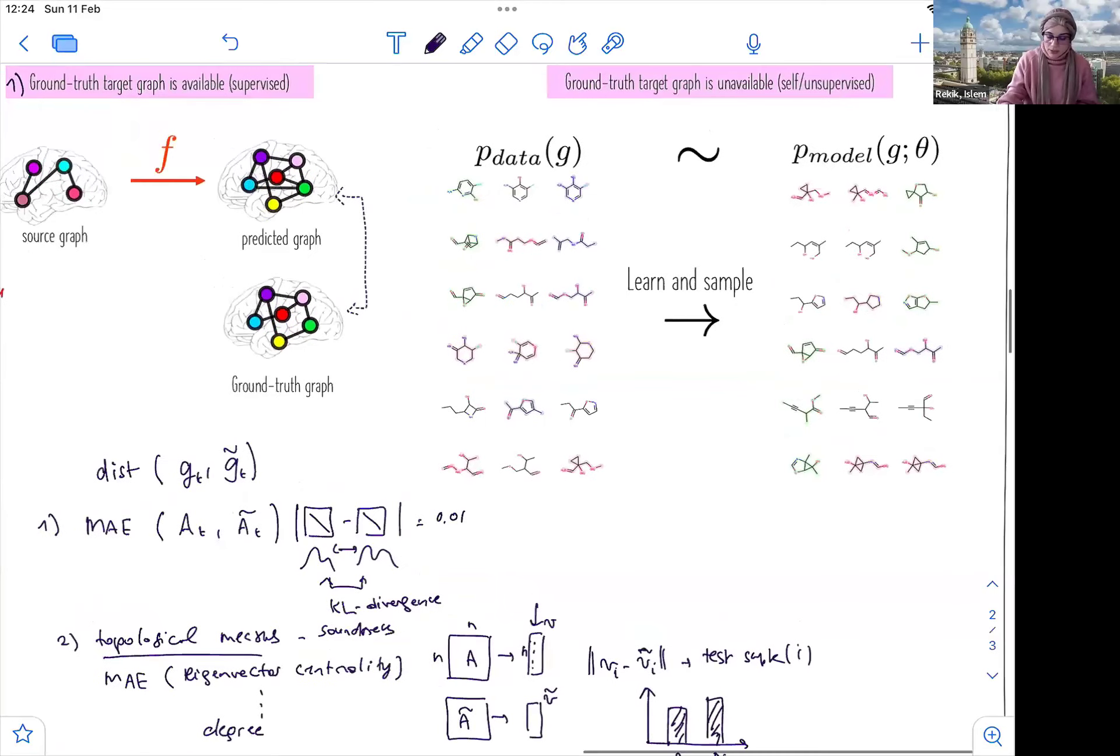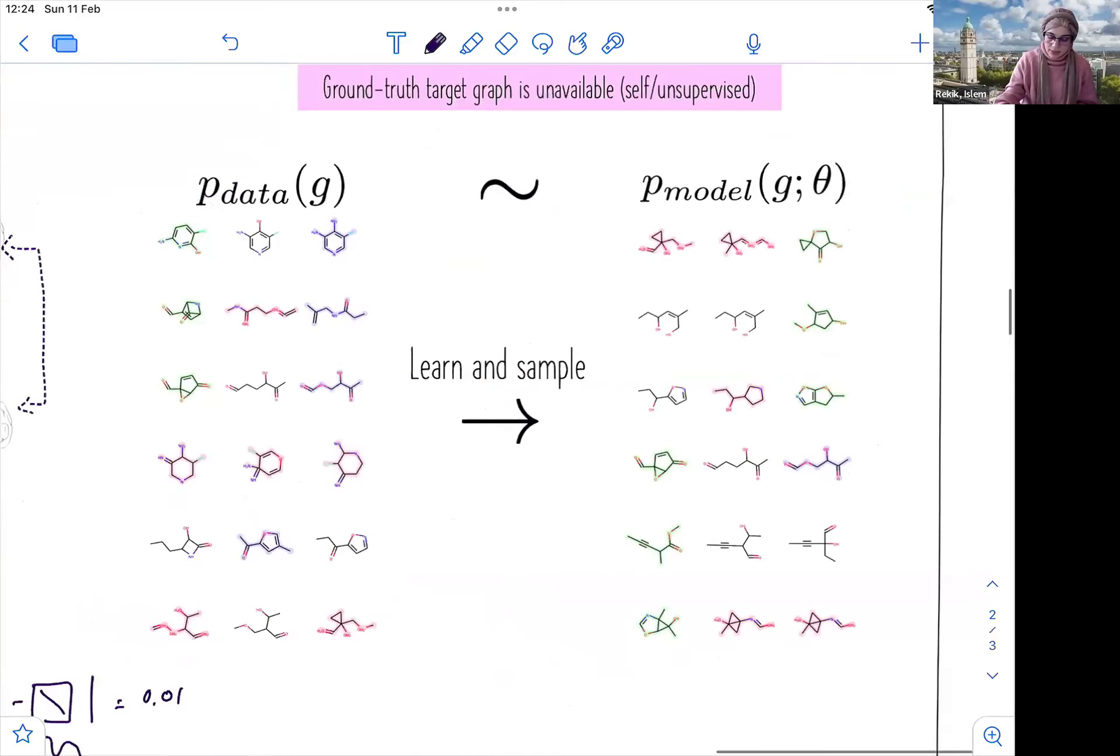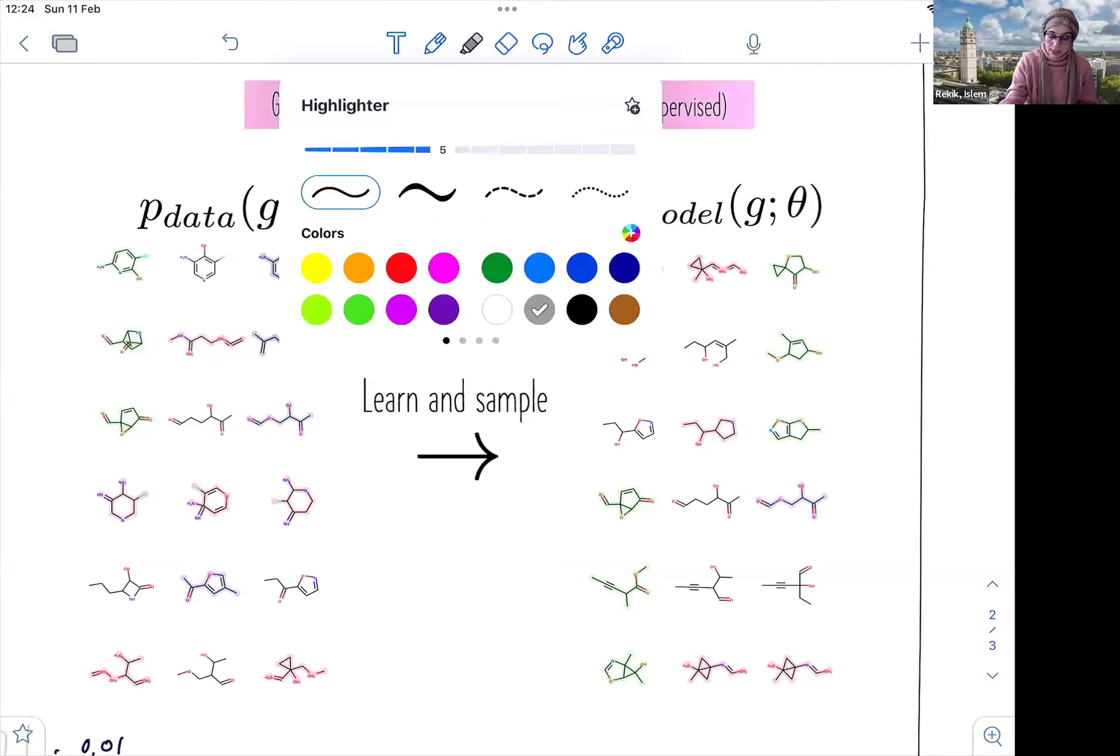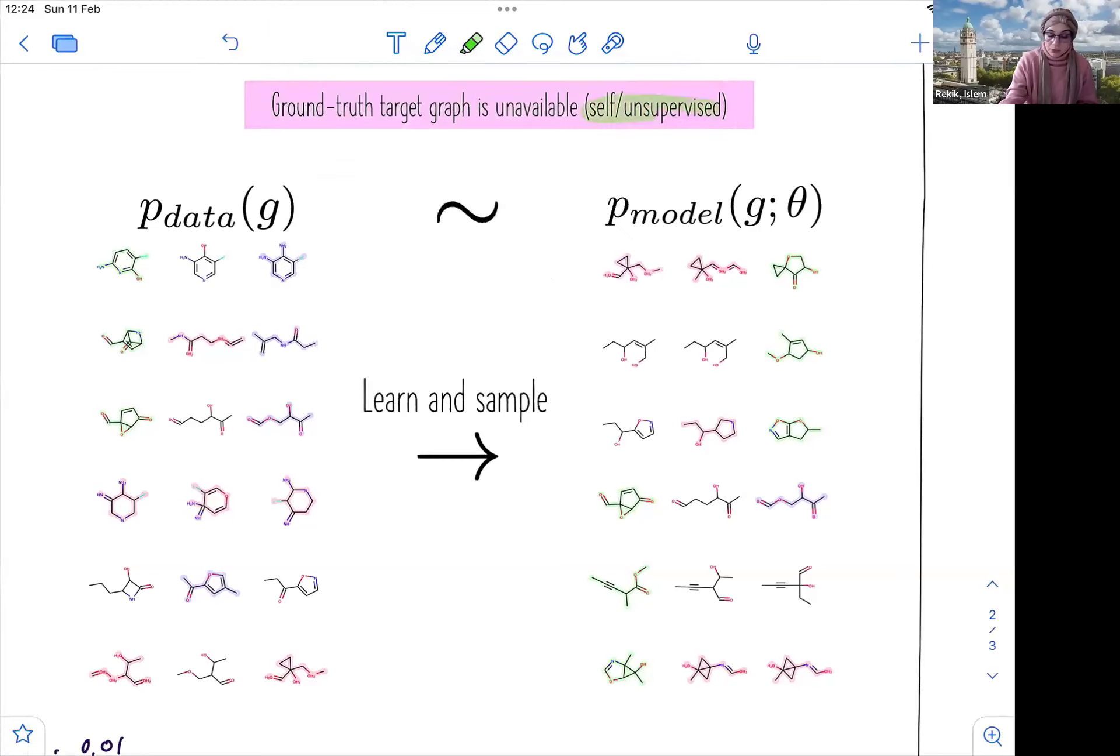So this is relatively easier than the second case. And the second case here, we don't have a ground truth. So the ground truth is actually unavailable, and we don't even know the ground truth distribution of our data, which actually the P data, we're trying to approximate it by this set.